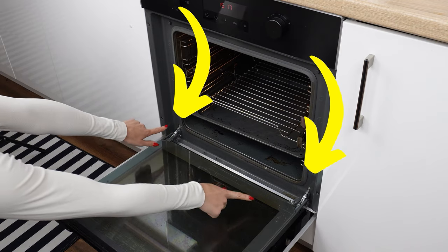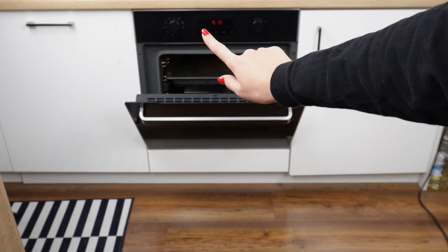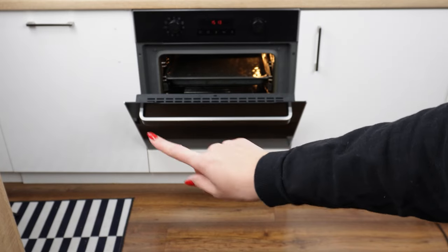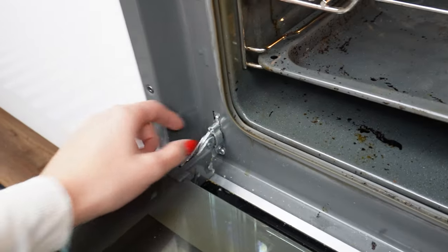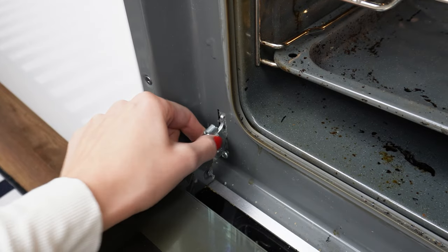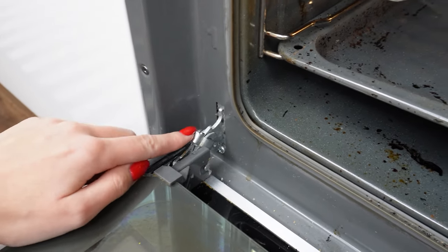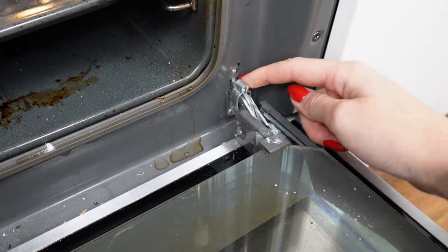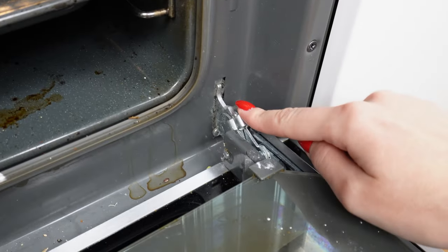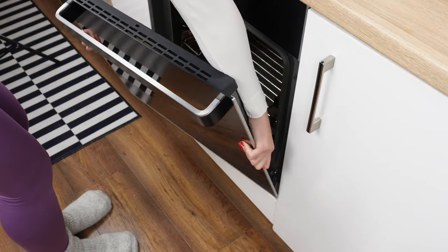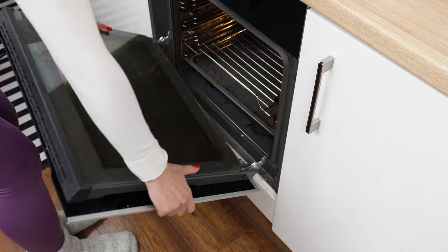Behind the oven door, there is a hidden button that makes cleaning easier. Most people are unaware of it. Just pull it upwards to release the lock. Repeat the process on the other side. With the doors prepared in this way, they will be easy to remove. Next, grab them and lift them slightly. The hinges should come out on their own.